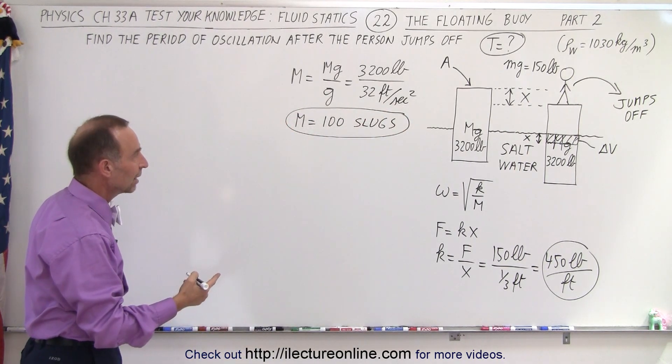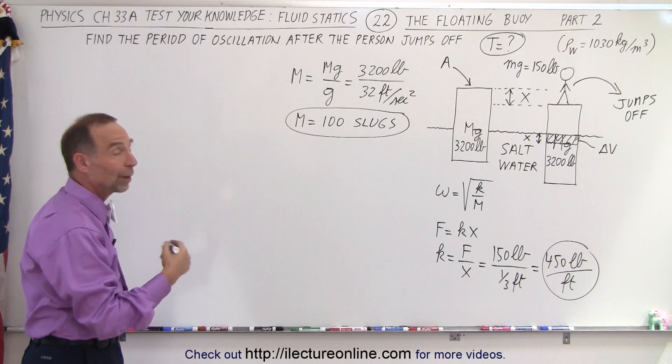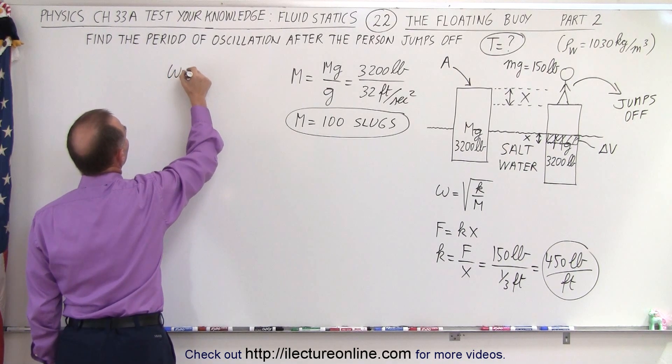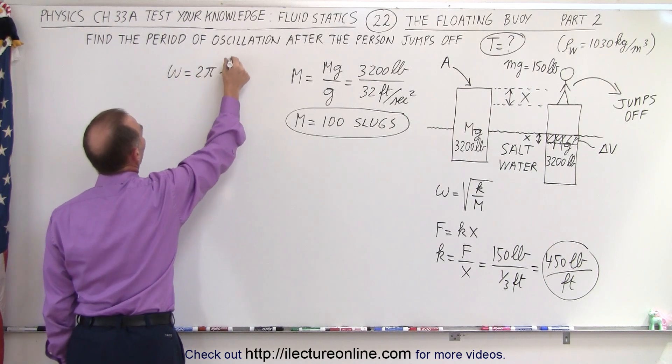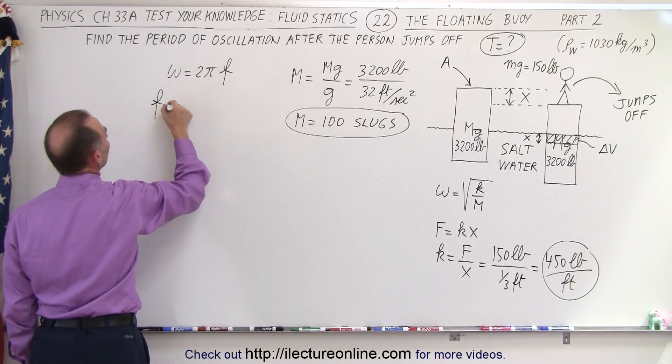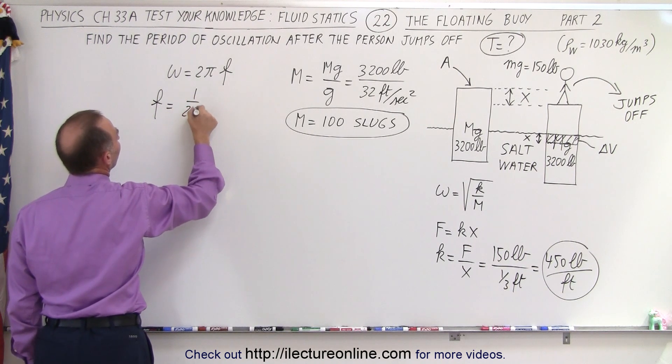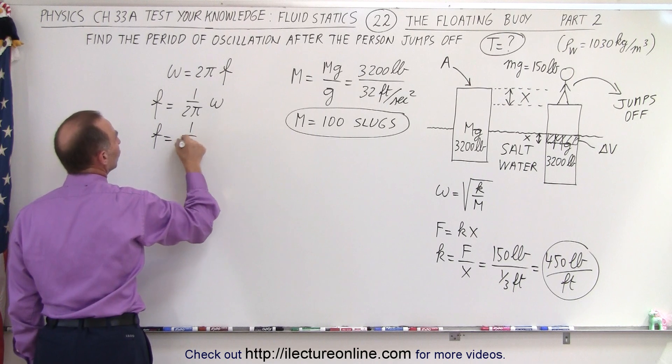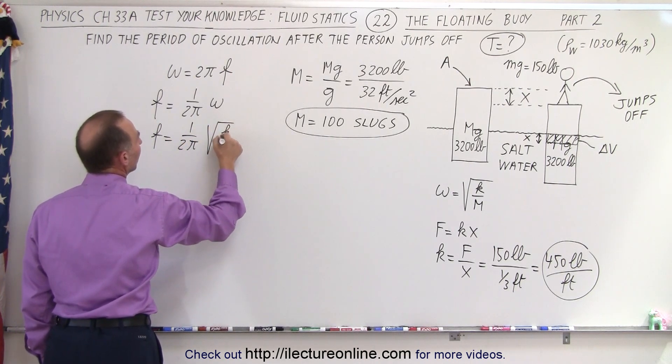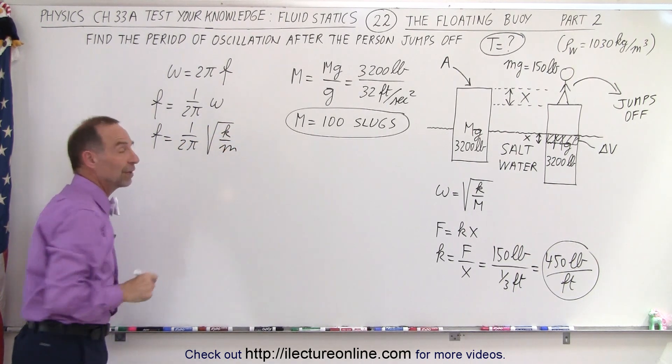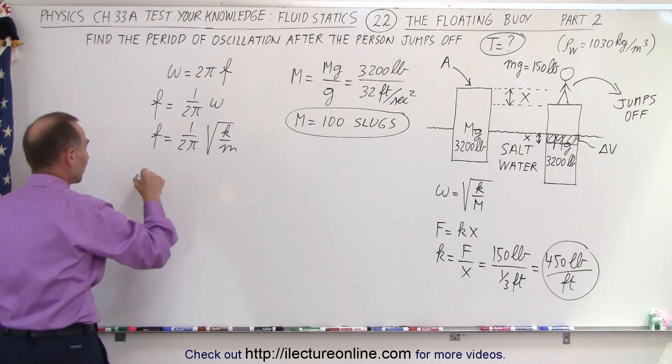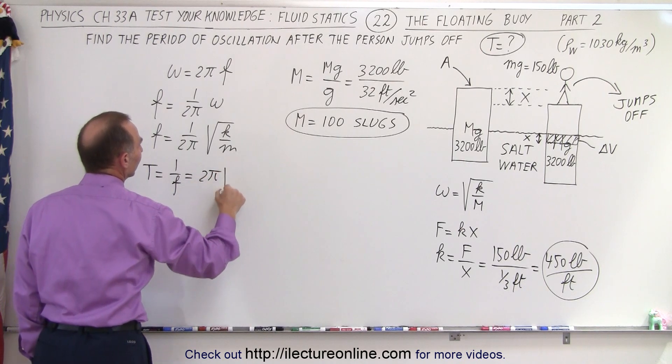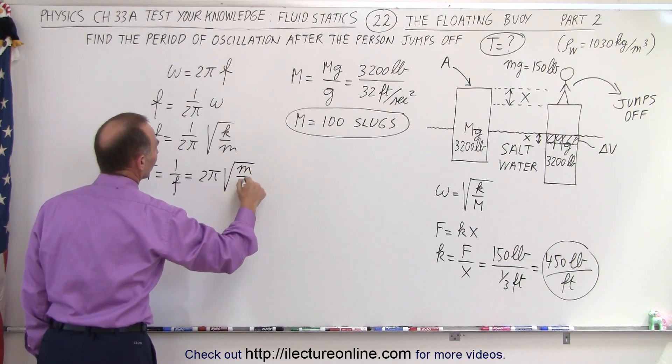So now we have k, we have m, and we're ready to find the period. We know that omega is equal to 2π times the oscillation frequency, or the frequency is equal to 1 over 2π times omega. And since omega equals the square root of k over m, that will be the equation for the frequency. Finally, the period, which equals 1 divided by the frequency, will be 2π times the square root of m over k.